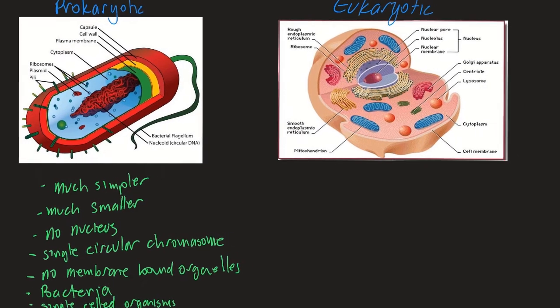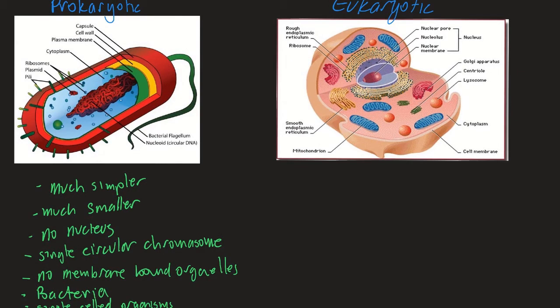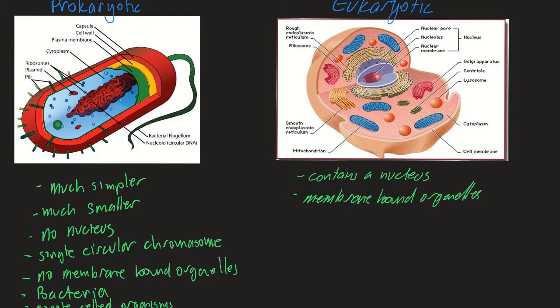The eukaryotic cell is much bigger and contains membrane-bound organelles; it's far more complex. The eukaryotic cell contains a nucleus, which holds the DNA and chromosomes, and it also has membrane-bound organelles. The organelles all have specialised functions and are contained within membranes to control the reactions that occur within them.